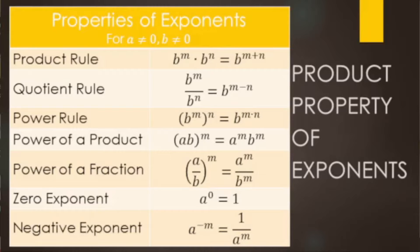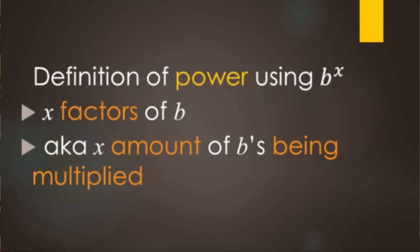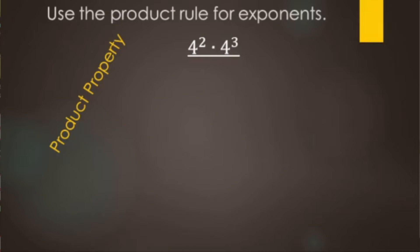In this video we'll be going over the product property of exponents, also called the product rule. When we have the same base, we just add the exponents. Before we get into it, let's do a quick review of what a power is. We're looking at b to the x power — this means you have x factors of b, so x number of b's being multiplied together.